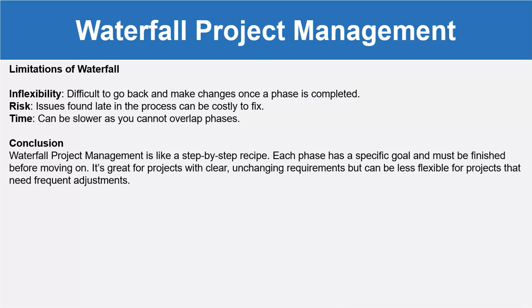The limitations of waterfall are: we cannot go back and make changes once a phase is completed, as it is strictly sequential. Issues found late in the process can be costly to fix, and it can be slower since you cannot overlap phases. In summary, waterfall project management is like a step-by-step recipe — each phase has a specific goal and must be finished before moving on. It's great for projects with clear, unchanging requirements, but can be less flexible for projects that need frequent adjustments.